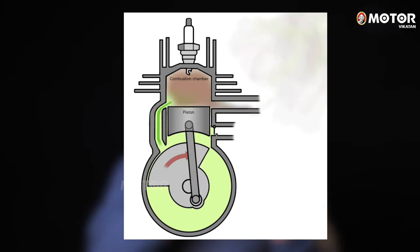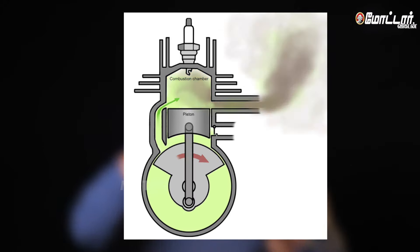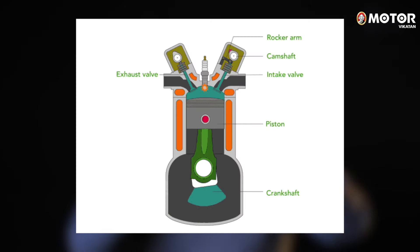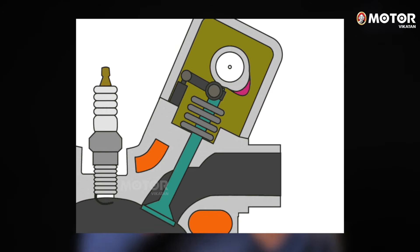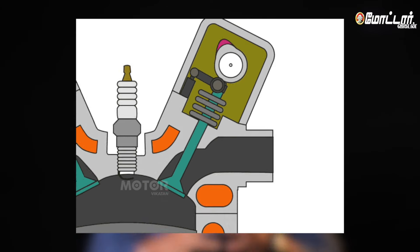The 2-stroke engine has fewer spare parts. One cylinder has three ports, a crankshaft, no valves, and the design is very simple and compact. It is easy to maintain. But the 4-stroke has more spare parts — there are two valves, crankshafts, camshafts, and sometimes a timing chain. The 4-stroke has a very complex design.